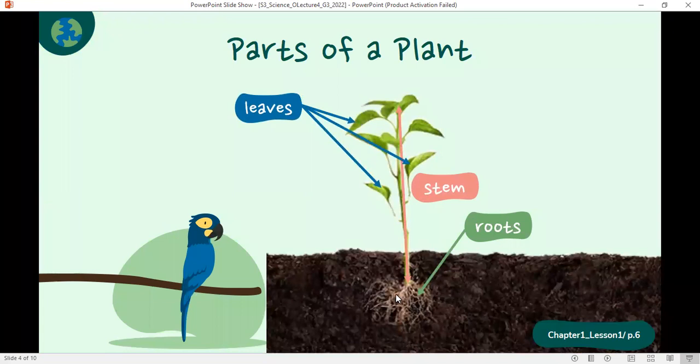The roots help the plant to take water and minerals from the soil. The stem, as I just said, supports the plant and it holds the leaves. The leaves have an important role for the plant. They catch the sunlight, they take the sunlight needed for the plant's growth.